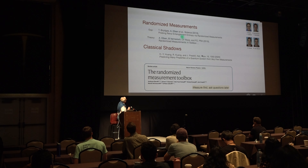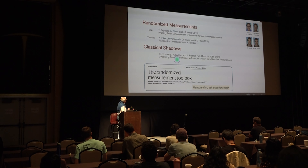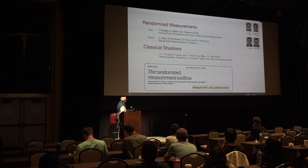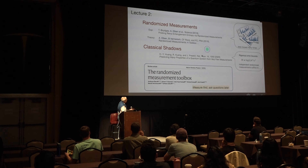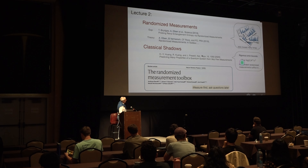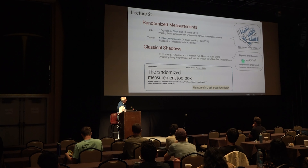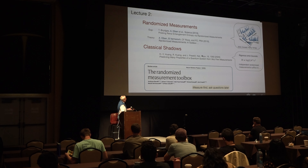For us, the key papers I talked about before are these ones, and the classical shadow one — the really famous one — is this one here. These are the people on the right who did these things. We have experimental data from here, and the great thing about classical shadows is to talk about how many measurements it takes. That's really what the content is.